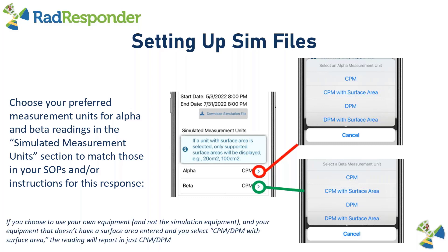If you choose to use your own organization's equipment instead of our default simulation equipment, and your organization's equipment does not have the surface area entered as part of those equipment details, and you select CPM or DPM with surface area, the reading will just report in CPM or DPM, because we don't have that surface area to give you that reading.